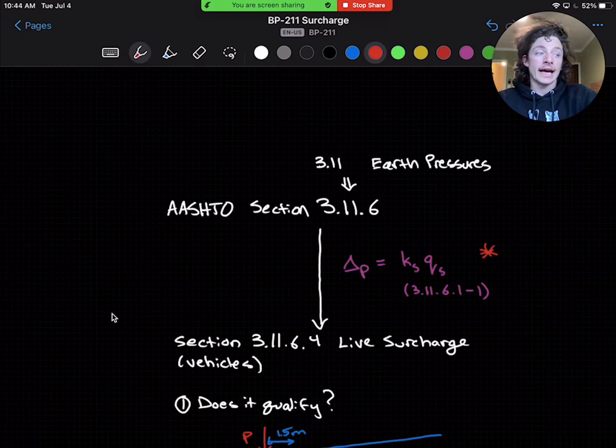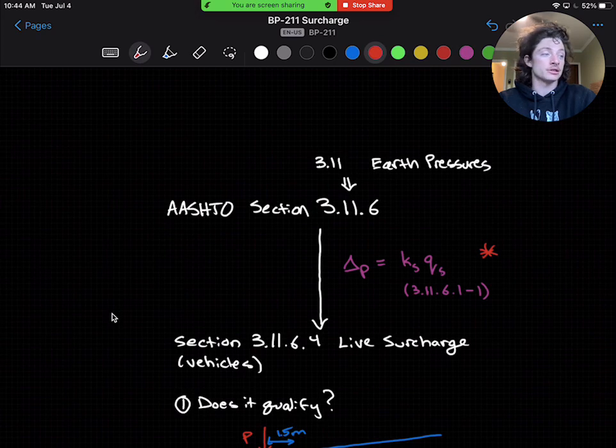The variable KS depends on whether you're using active, passive, or at-rest conditions, as you may remember from the previous lecture. QS is the uniform surcharge loading applied above, and delta P is the uniform lateral pressure that is created by that surcharge load.